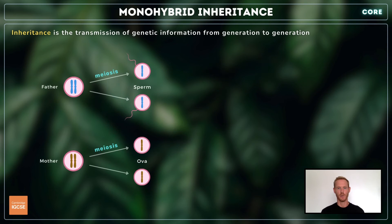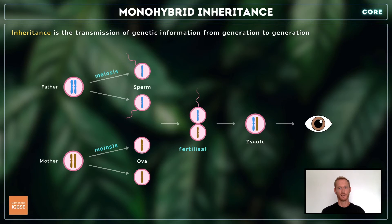When gametes are produced, the pairs of chromosomes divide, meaning only one allele of each gene is passed on to the next generation. During fertilisation, the nuclei of the male and female gametes fuse, resulting in a new and unique combination of alleles.